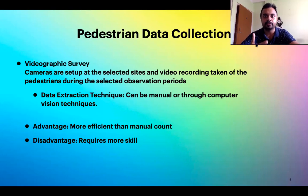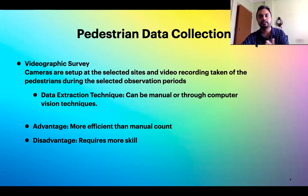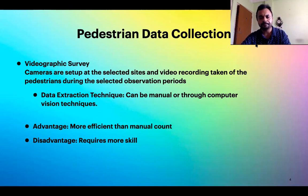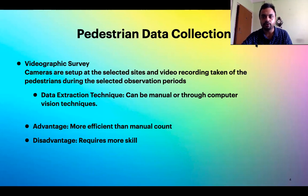In earlier days, data was collected by manual observation — researchers placed persons at a location who would count pedestrians. For example, 100 people moved from 9:00 to 9:30, or 500 people moved from 10:00 to 11:00 at a particular location. This manual counting is a very tedious job. Nowadays we have advanced techniques using various sensors and cameras to collect data automatically.